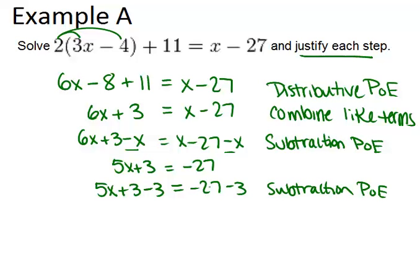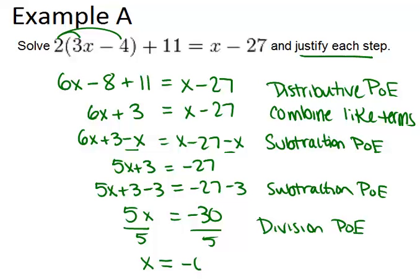And when you combine like terms there, you end up with 5x equals negative 30. And then I'm going to divide both sides by 5, which you're allowed to do by the division property of equality, in order to get x by itself. And you end up with x equals negative 6.